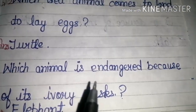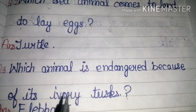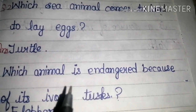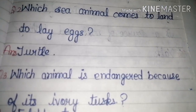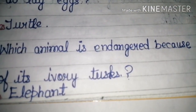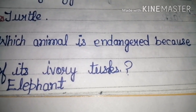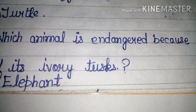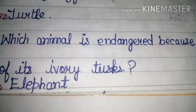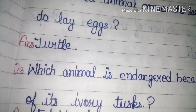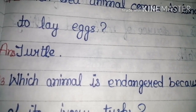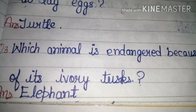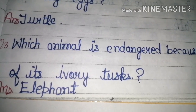Which animal is endangered because of its ivory tusks? Ivory is a very precious material — ornaments and jewelry are made from it. So children, which animal is in danger because of its ivory tusks? That animal is the elephant, which is endangered because of its ivory tusks.